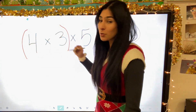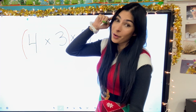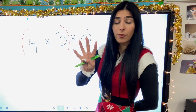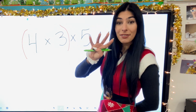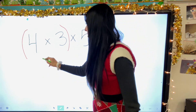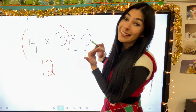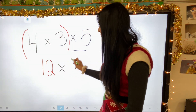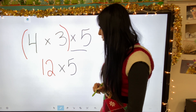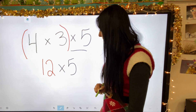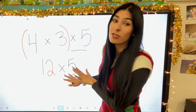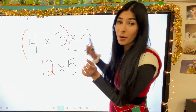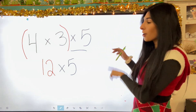So we're going to do the parentheses first. What is four times three? Four plus four is eight, plus four more is twelve. So this equals twelve. I don't want to leave my other friend out, so I'm going to bring the five down. We have twelve times five as our new equation. I like to make my equations vertical — it's just so much easier to comprehend.